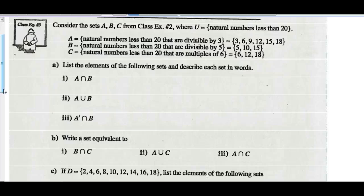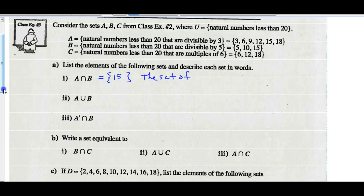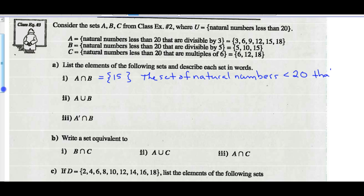A intersect B. The ones that are common between A and B — the only number common there is 15. I would describe this as the set of natural numbers less than 20 that are divisible by 3 and 5.